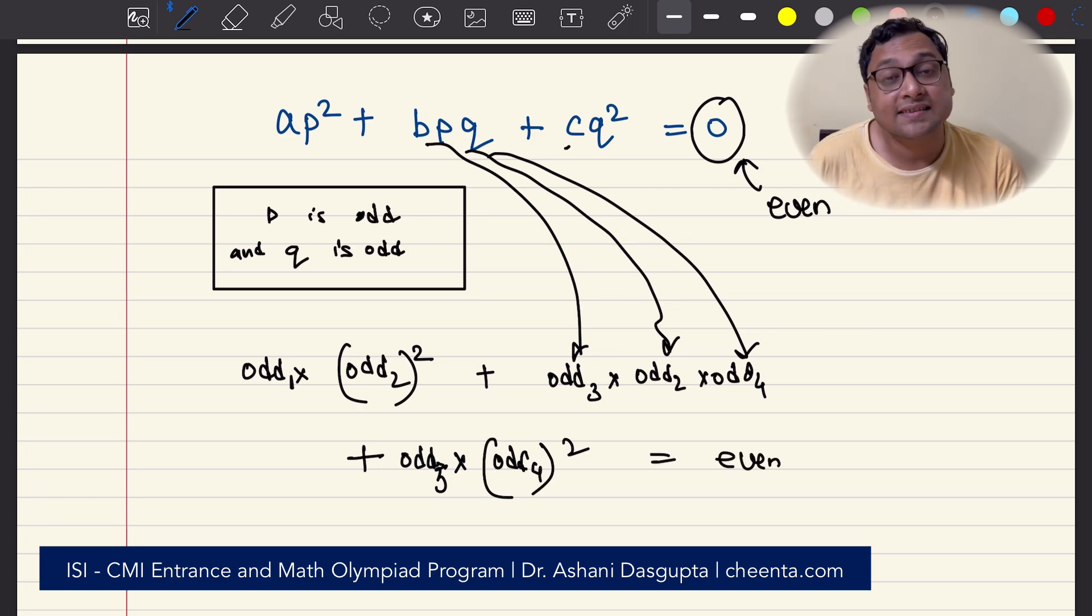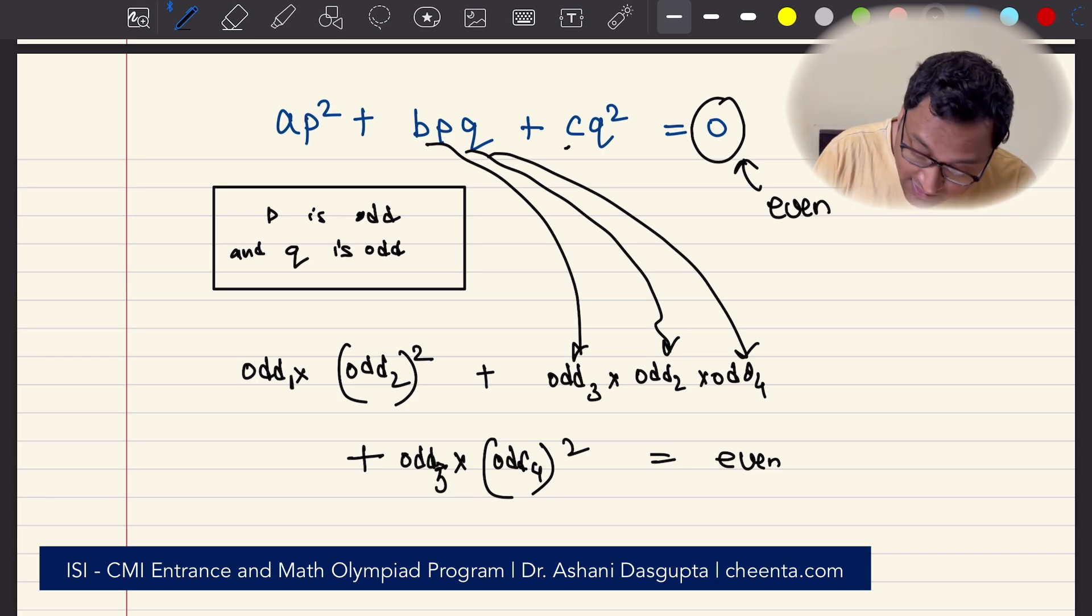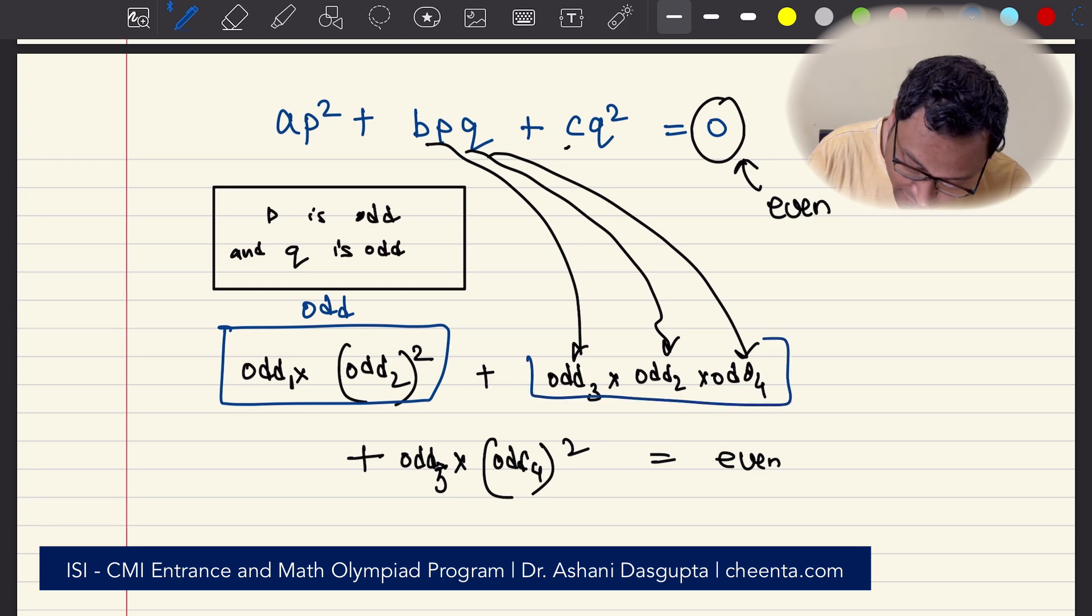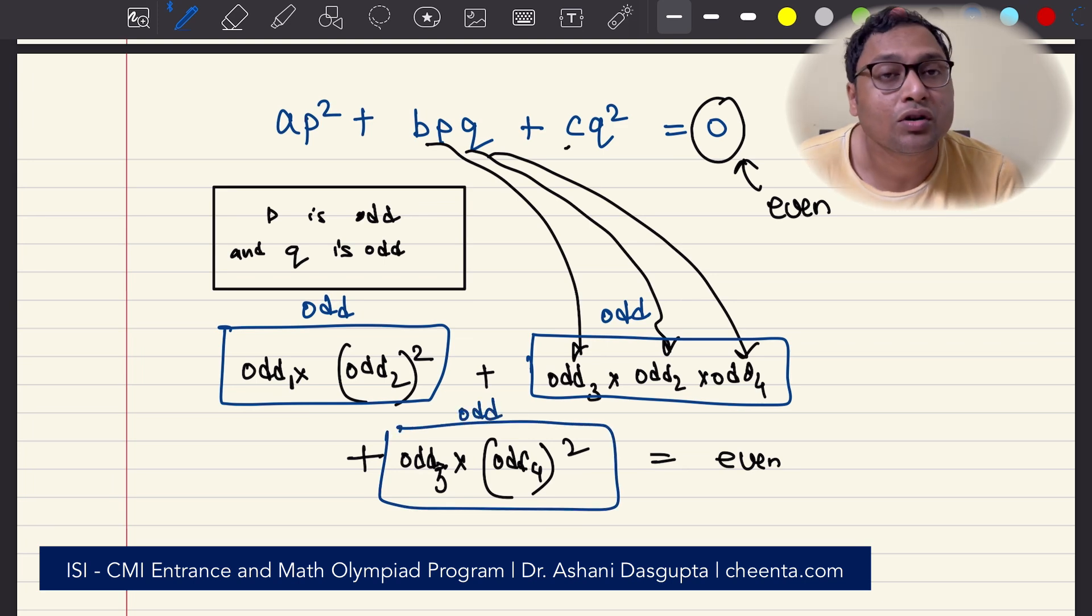This is equal to even. The question is, can this happen? Well, it can't happen because if you multiply a bunch of odd numbers, that will be odd. This is also a product of several odd numbers, so this will also be odd, and this is also odd.